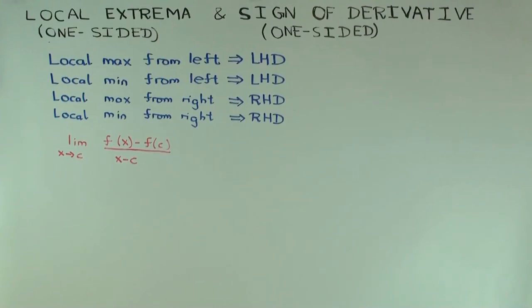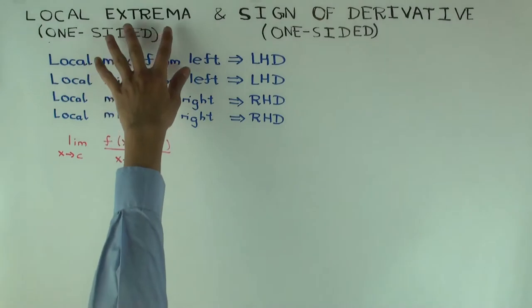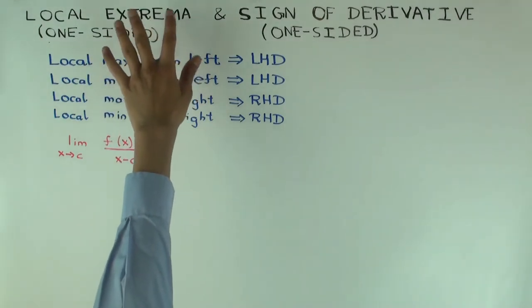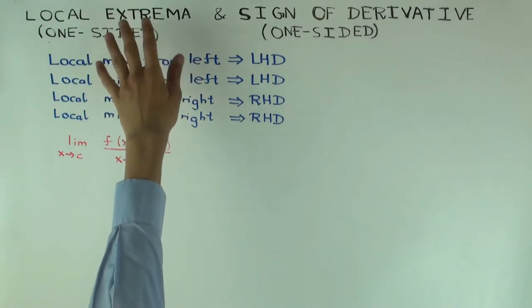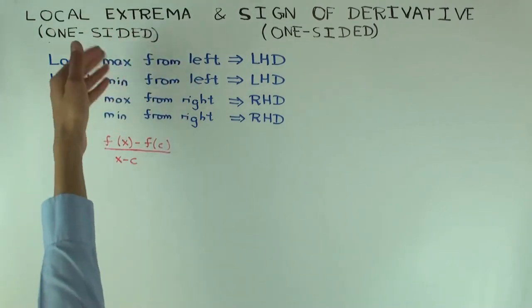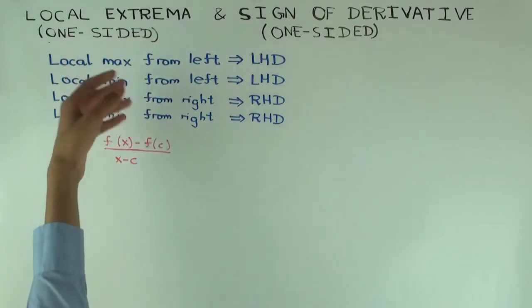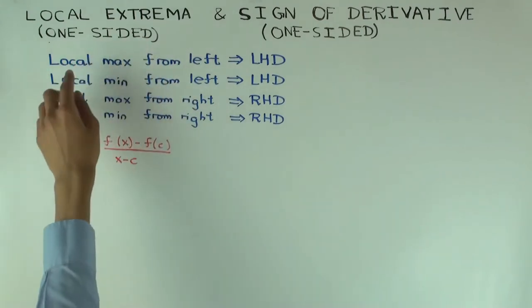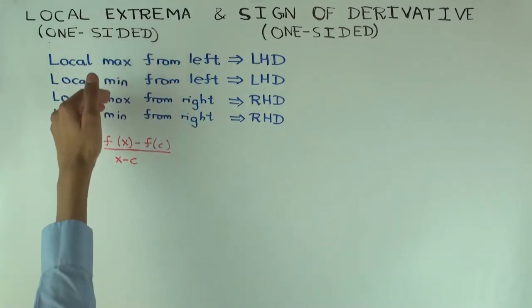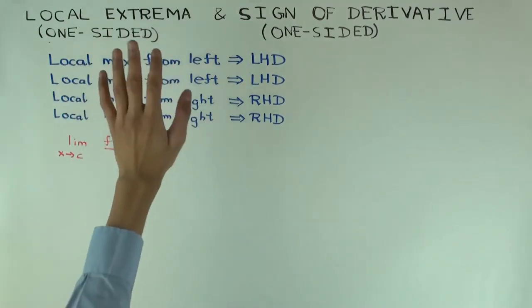In this talk, I'm going to consider one-sided local extrema. Extrema means max or min, and one-sided means left or right. So there'll be a total of four cases: max and min from the left, max and min from the right — two times two is four.